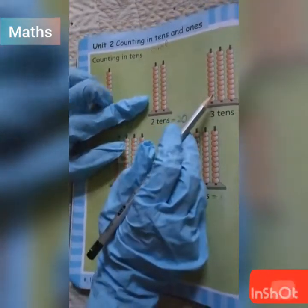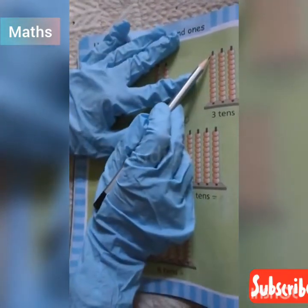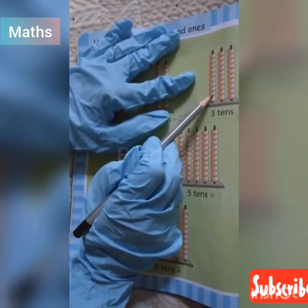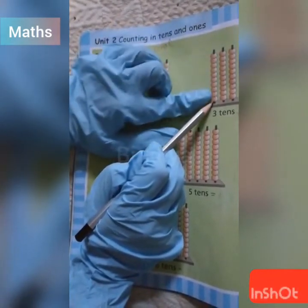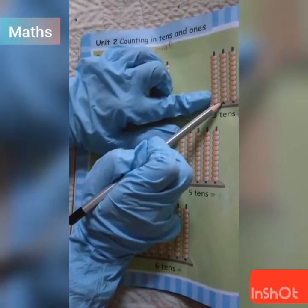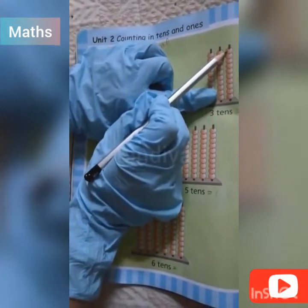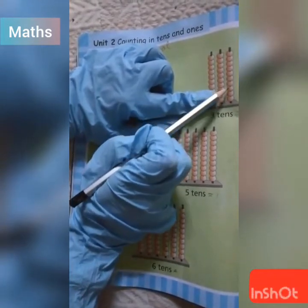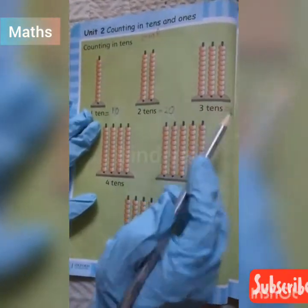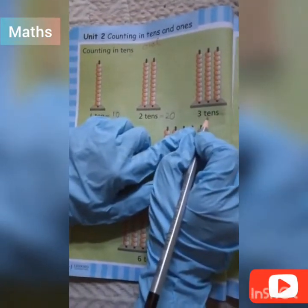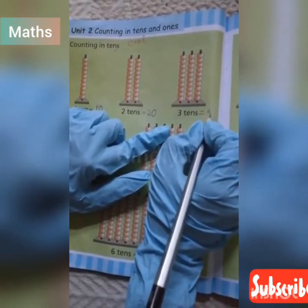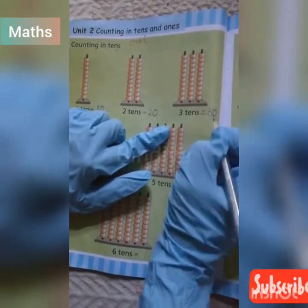Look at here. Count with me. 1, 2, 3, 4, 5, 6, 7, 8, 9, 10. It's 10. The next one: 1, 2, 3, 4, 5, 6, 7, 8, 9, 10. It's also 10. The next: 1, 2, 3, 4, 5, 6, 7, 8, 9, 10. It's also 10. These are equal. So it's 3 tens. 3 tens is equal to 30.